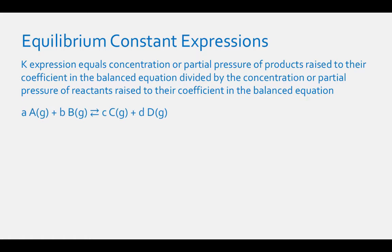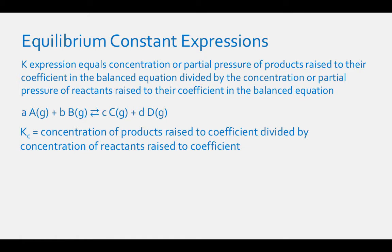For a generic reaction such as A·A(g) + B·B(g) ⇌ C·C(g) + D·D(g), Kc equals the concentration of C raised to the power c times the concentration of D raised to the power d, divided by the concentration of A raised to the power a times the concentration of B raised to the power b.